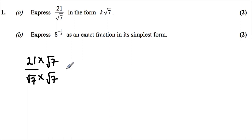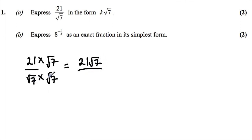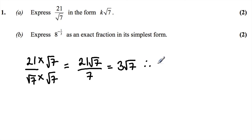When we do this, the square root of 7 in the denominator disappears, leaving a normal number. So 21 times the square root of 7 gives us 21√7, and square root of 7 times square root of 7 gives us 7. Since 7 goes into 21 three times, we get 3√7. Therefore the value of k is 3.